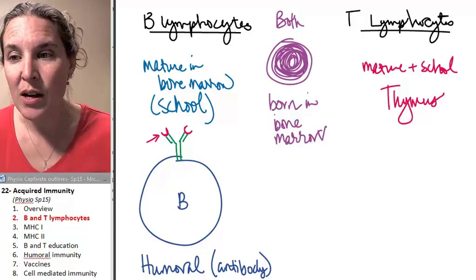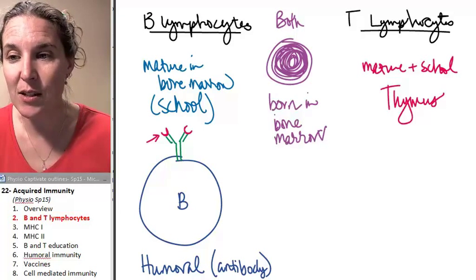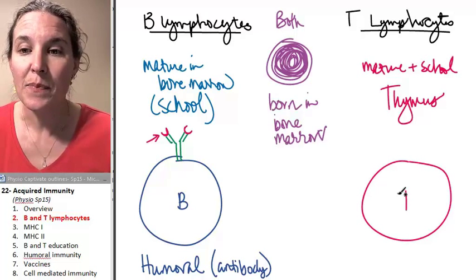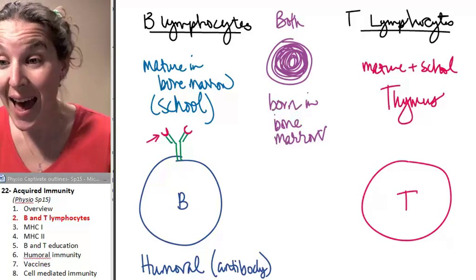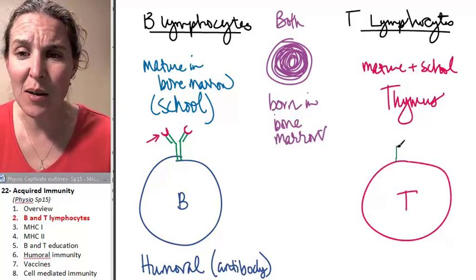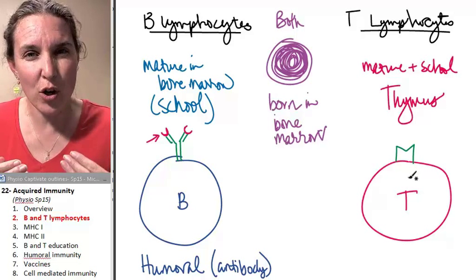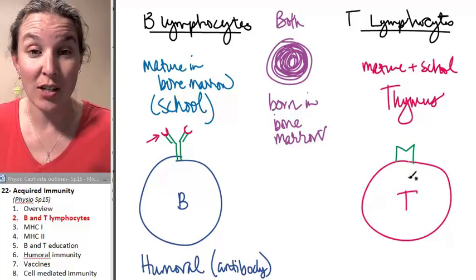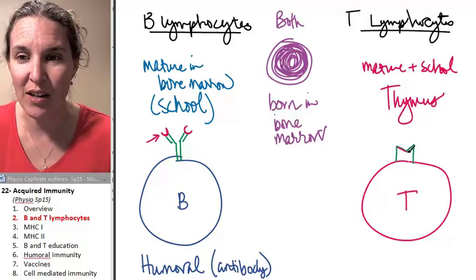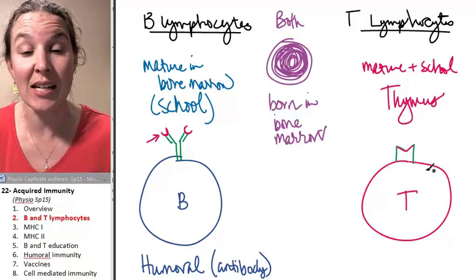Compare that to the T lymphocytes. These guys have a receptor, but it's called a T cell receptor. And it's different. It's more of a normal receptor that you would imagine. And it has that unique special zone here that makes it bind to only certain antigens.